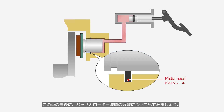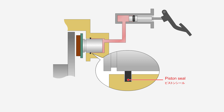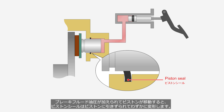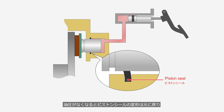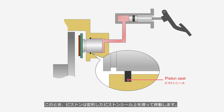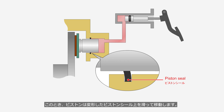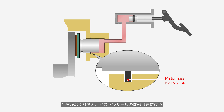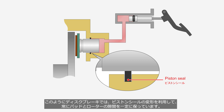We will learn about adjusting the clearance between the pad and the rotor. When brake fluid pressure is applied and the piston moves, the piston seal is dragged along with the piston and deformed slightly. When the hydraulic pressure is released, the deformation of the piston seal returns to its original state, and the piston is dragged by the piston seal back to its original position. When the pads are worn, the piston moves until the pads make contact with the rotor. At this time, the piston slides over the deformed piston seal. When the hydraulic pressure is released, the deformation of the piston seal returns to its original state, and the piston is dragged back by the piston seal by the amount of its deformation. In this way, disc brakes utilize the deformation of the piston seal to consistently maintain a constant clearance between the pads and the rotor.